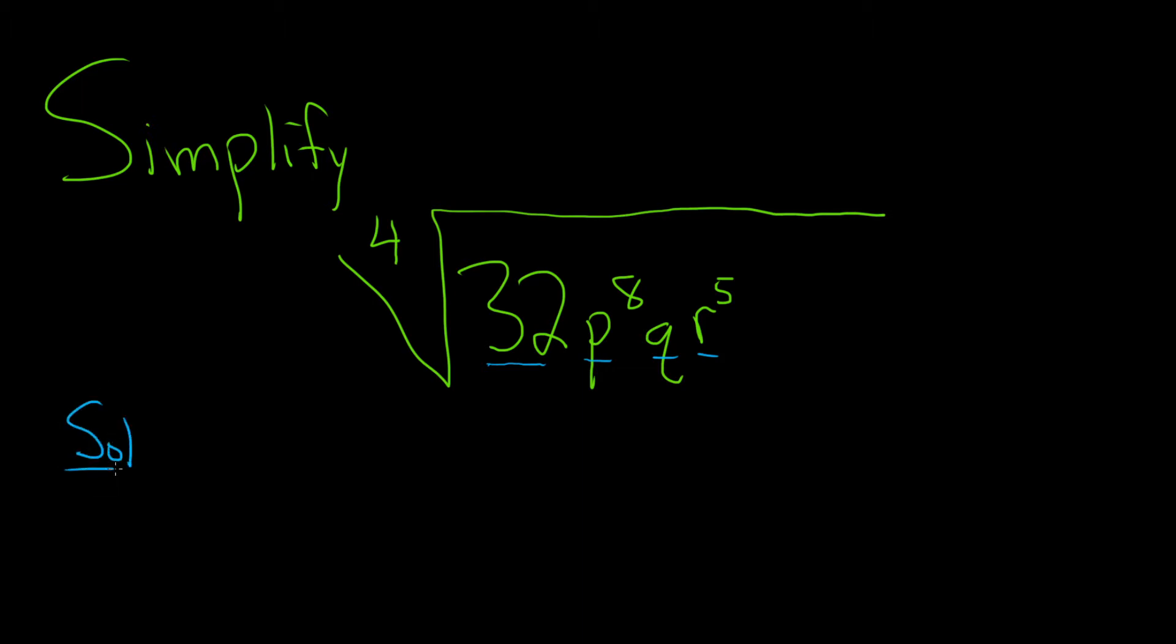So solution. This is the fourth root of all of that stuff. Let's start with the 32. So 32 is 2 to the fifth. So 2 to the fifth is equal to 32. So we can break up the 32 as 2 to the 4 times 2 to the 1. And the reason is that you actually add the exponents here. 4 plus 1 is equal to 5. So we can write it this way. So it will be 2 to the 4 times 2 to the 1. So that takes care of the 32.